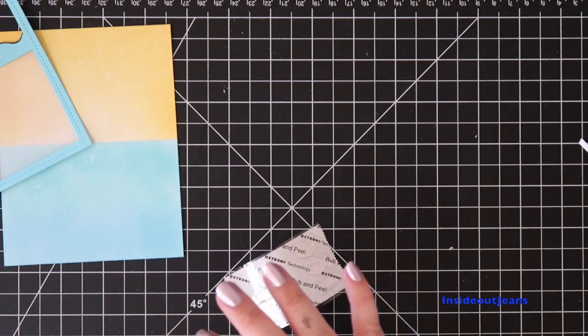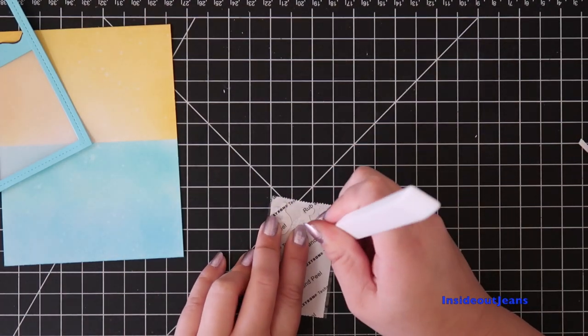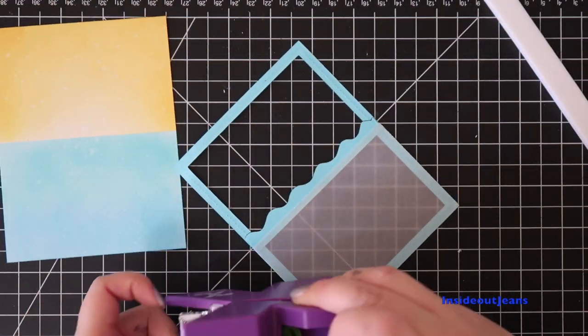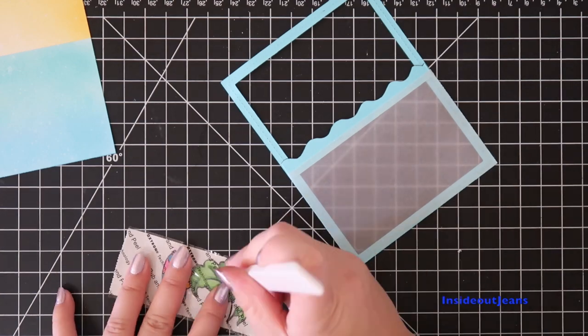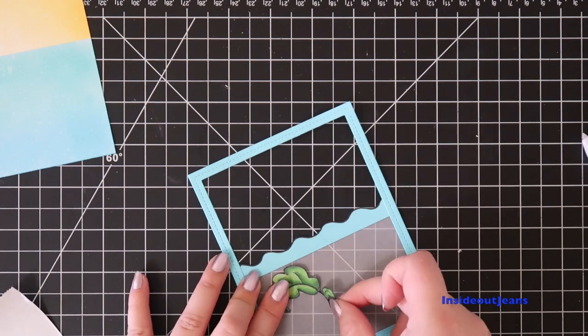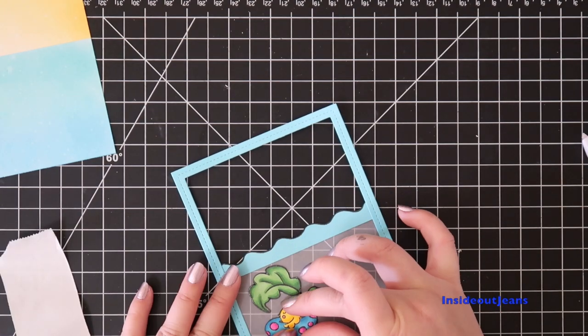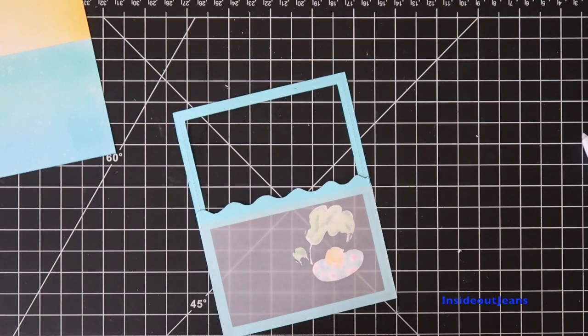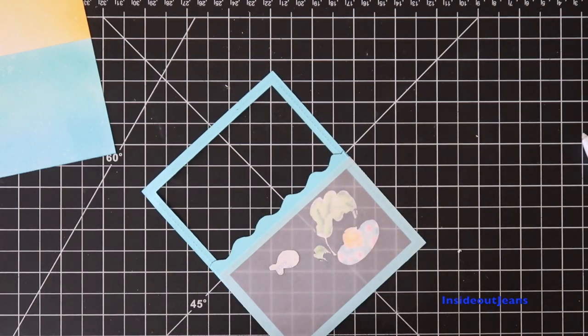I use a Xyron sticker maker to put the fishes face down so the adhesive is actually on the colored parts. Since you can't really see the fishes through the vellum if I put it directly on the background, I decided that I'll put it directly onto the vellum. But I use the chick with the floaty face up so the adhesive is on the back and that will be at the front of the card.